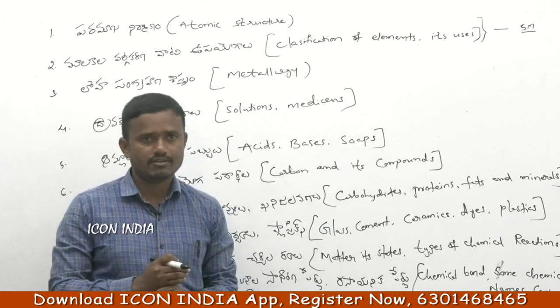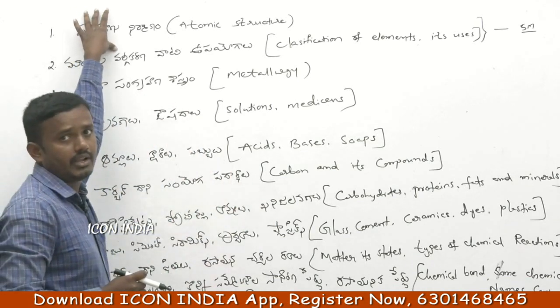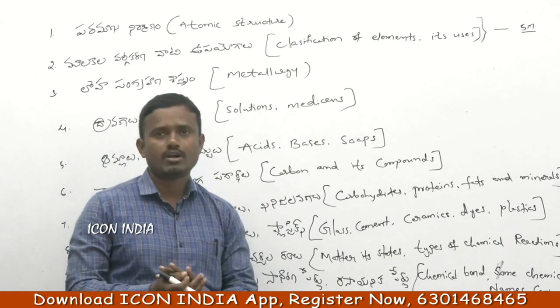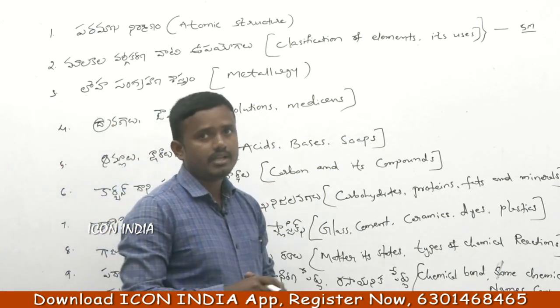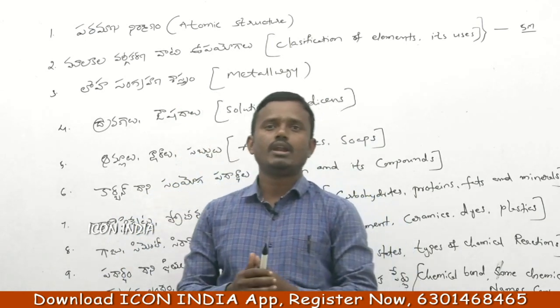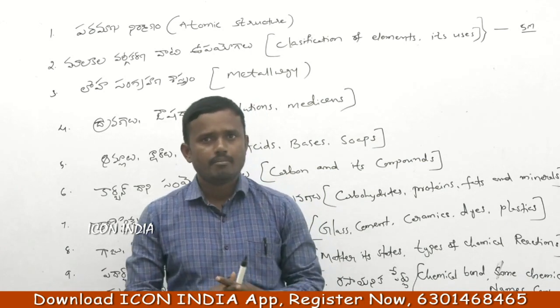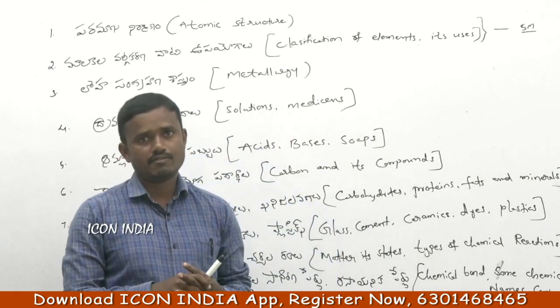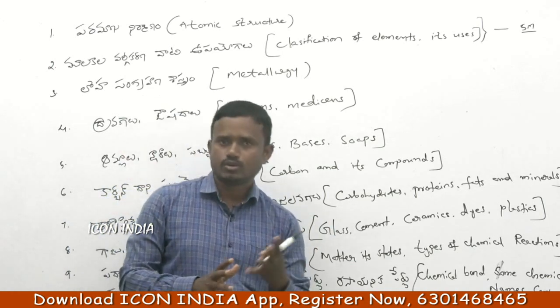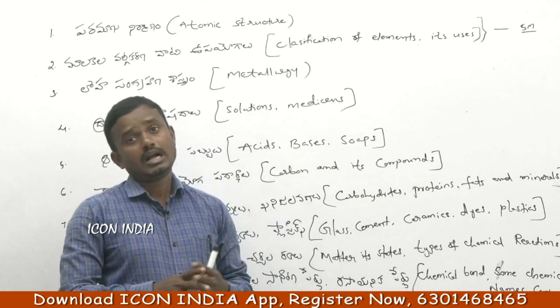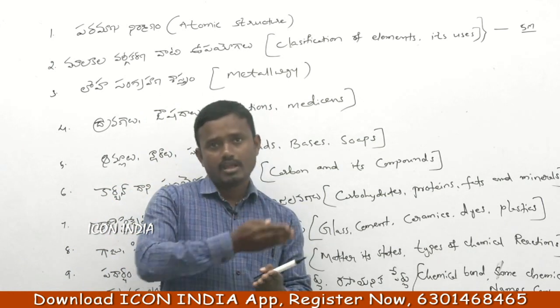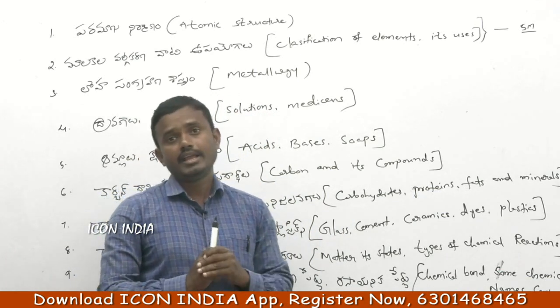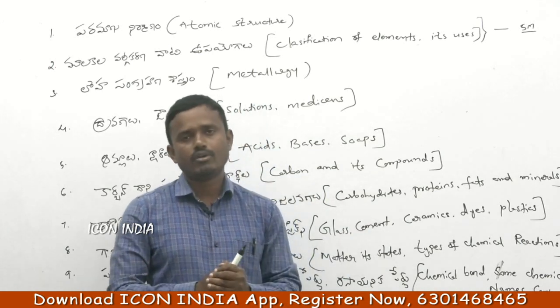From atomic structure, we study isotope, isobar, isotone, isodiafere, isostere, and isomers. We also learn about atomic models by scientists like J.J. Thompson, Rutherford, Sommerfeld, and Niels Bohr. We discuss electrons in orbits using quantum theory.